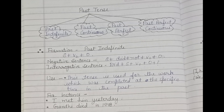Use of the past indefinite tense: this tense is used for the work which was completed at a specific time in the past. For instance, I met him yesterday — here 'yesterday' denotes the past, so we use simple past or past indefinite. Next example: Gandhi died in 1948.